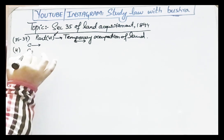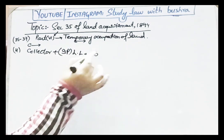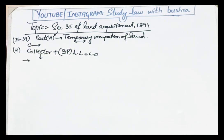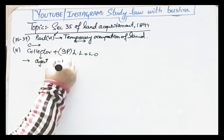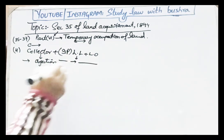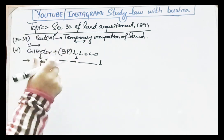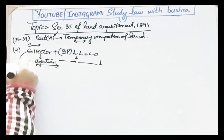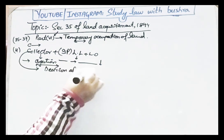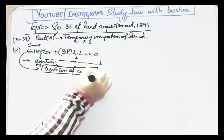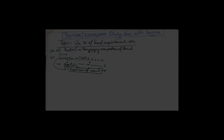Section 35 Clause 4 addresses the situation where, after the Collector has determined the compensation for the three-year period, a dispute or objection arises between the Collector and the interested person. If the interested person says the compensation determined is too low, or if there are differences regarding compensation or its apportionment — especially where there is more than one land owner — then the Collector shall file a reference in the concerned court, which will decide the differences.